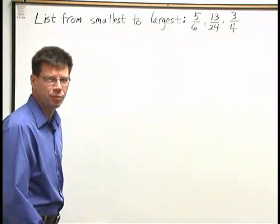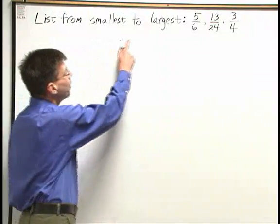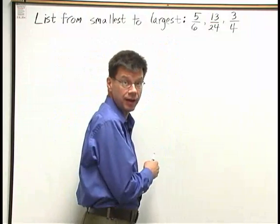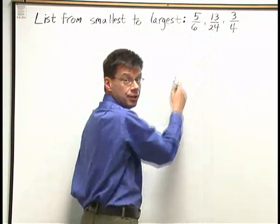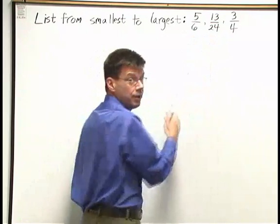In this problem, we're going to list from smallest to largest three fractions: 5 sixths, 13 24ths, and 3 fourths.